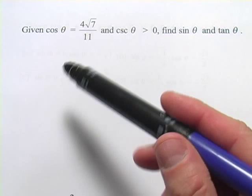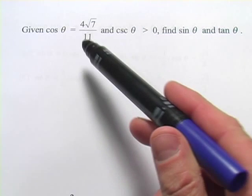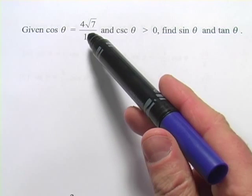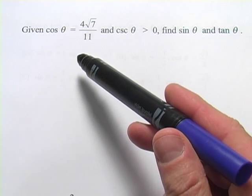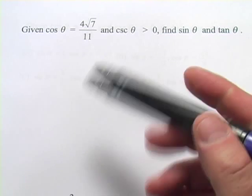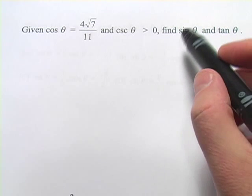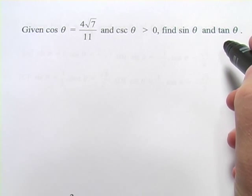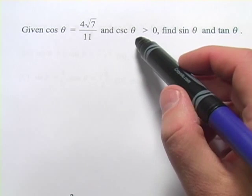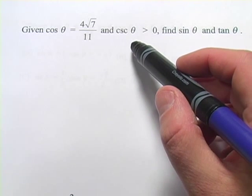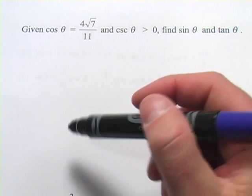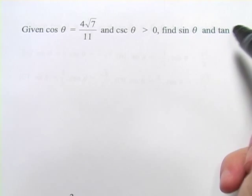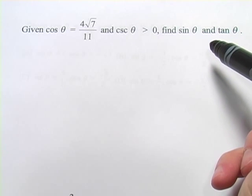In these problems, we are being given one trigonometric value — in this case the cosine of theta equals 4 times the square root of 7 over 11. We are being asked to find a couple of other trigonometric values: the sine of theta and the tangent of theta. We've also been given one other piece of information that seems a little confusing at first. We've only got the cosine — how do we find both the sine and the tangent from that?